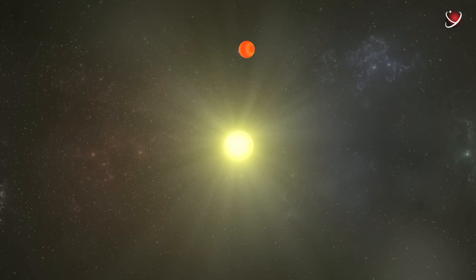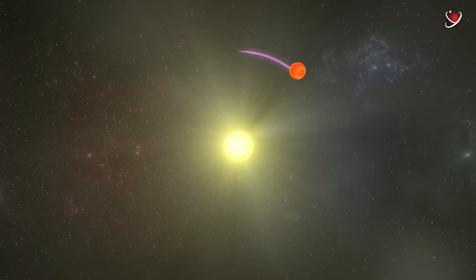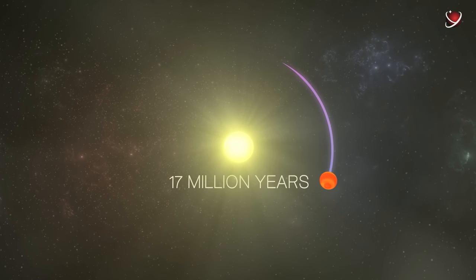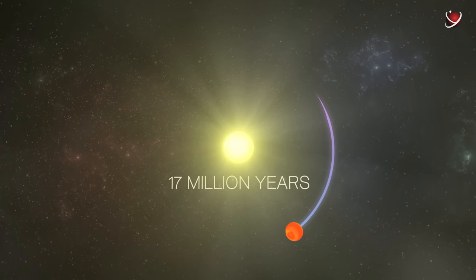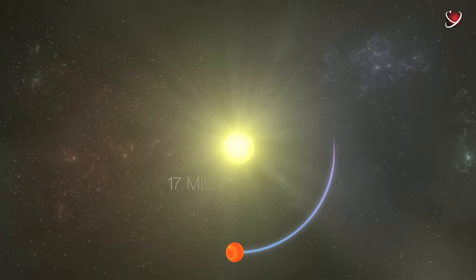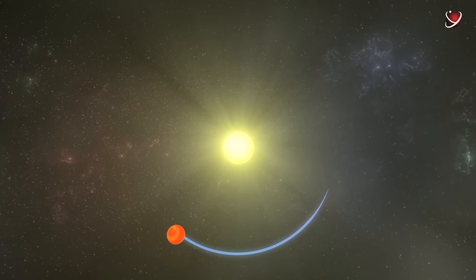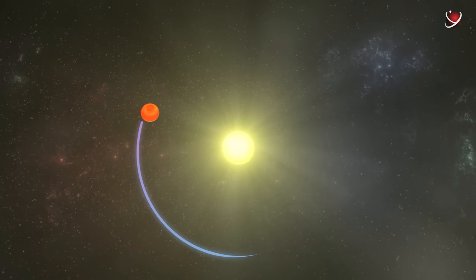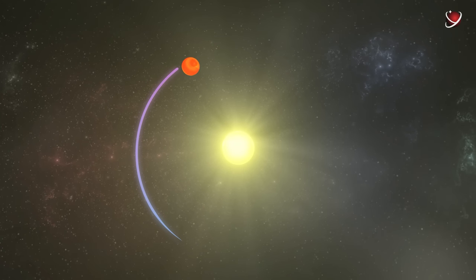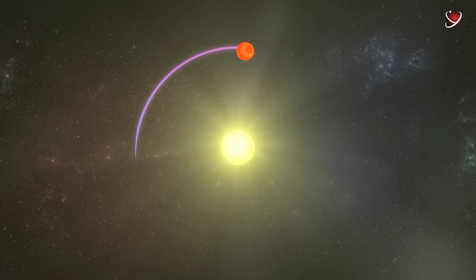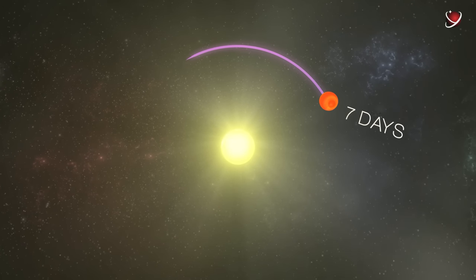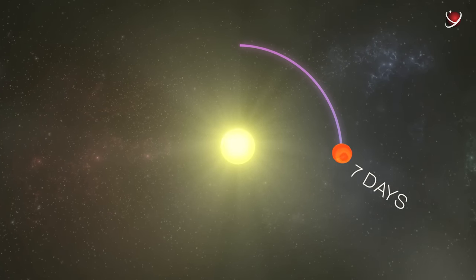To estimate the age of the planet was not difficult since the age of the parent star was 17 million years. It allowed astronomers to argue that the hot Jupiter is probably a few million years younger. Most members of this class of exoplanets tend to be over a billion years old. And there is a strange fact. The planet is so close to the star that it makes a complete revolution in just seven days. There are more interesting facts.